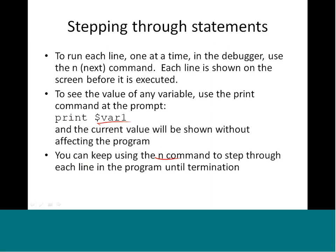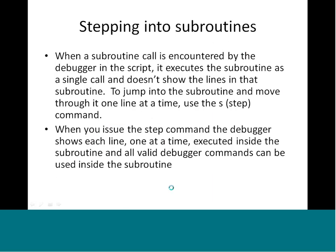To run each line one at a time, use the n or next command. When a subroutine call is encountered by the debugger, using n executes the subroutine as a single step and does not show the lines inside that subroutine. To jump into the subroutine and move through it line by line, use the s or step command. When you issue the step command, the debugger shows each line one at a time inside the subroutine, and all valid debugger commands can be used inside the subroutine.